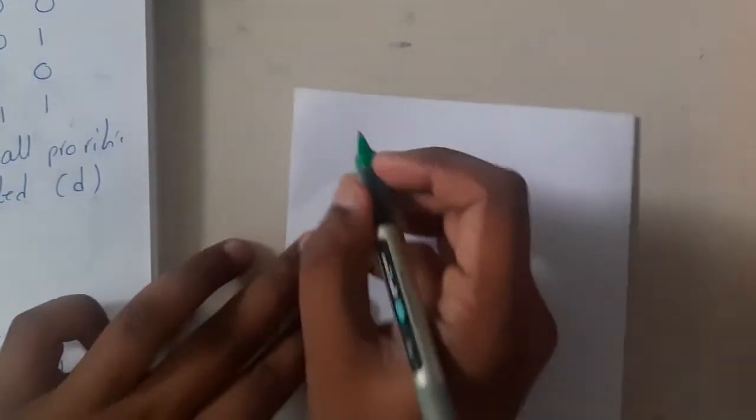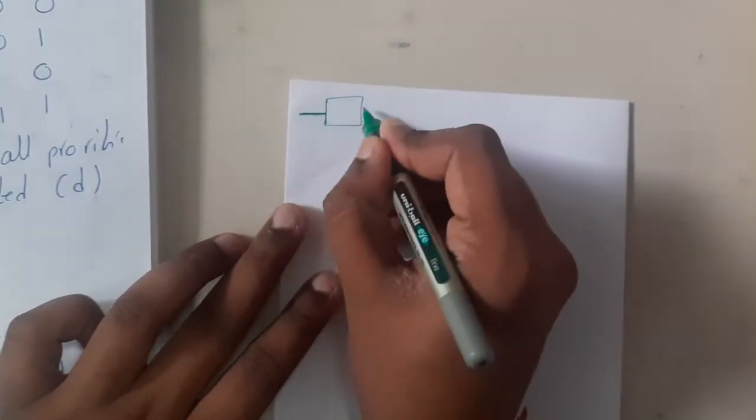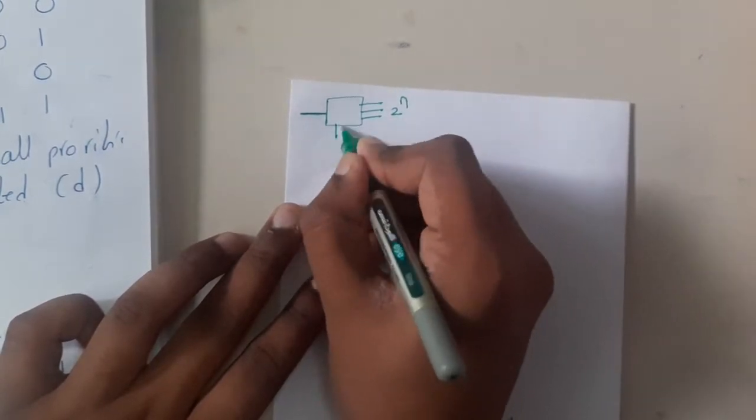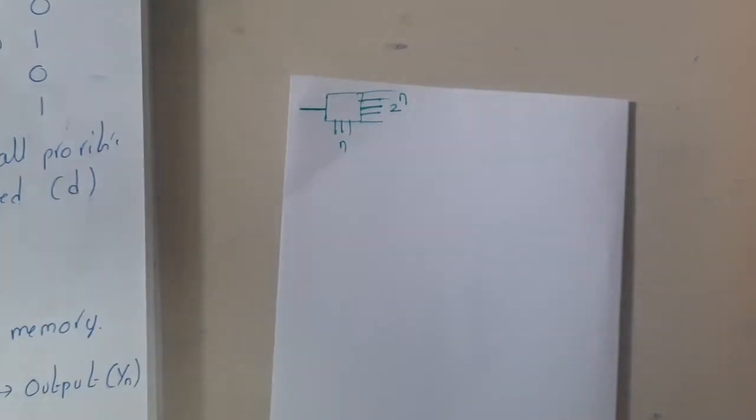If you recall, we discussed about demultiplexer. How many inputs are there in demultiplexer? In demultiplexer we have one input and many outputs, that is 2 power n outputs and n select lines. That is a demultiplexer.